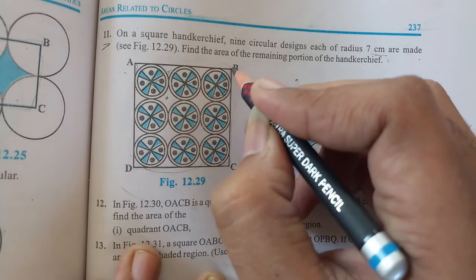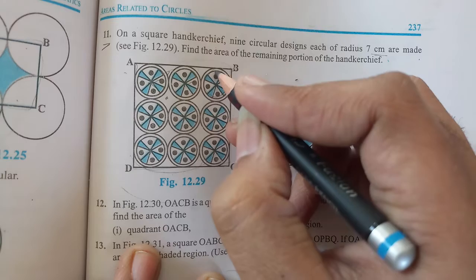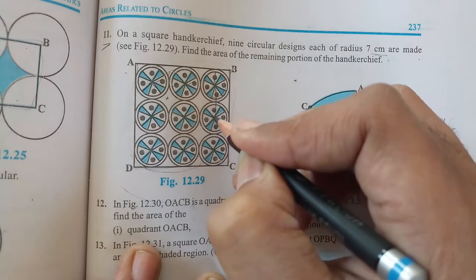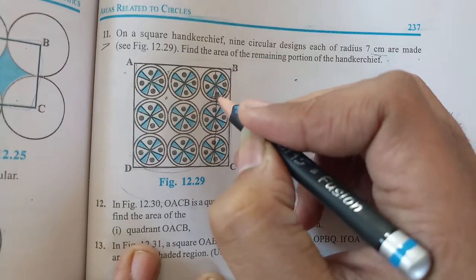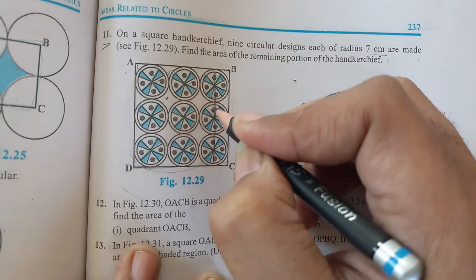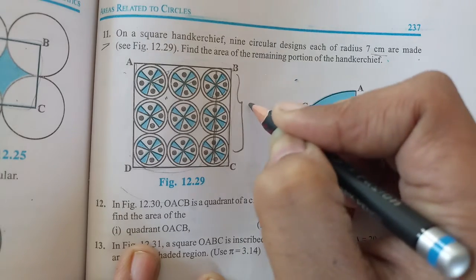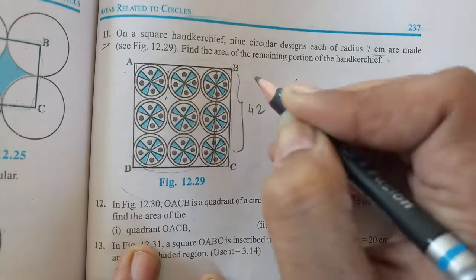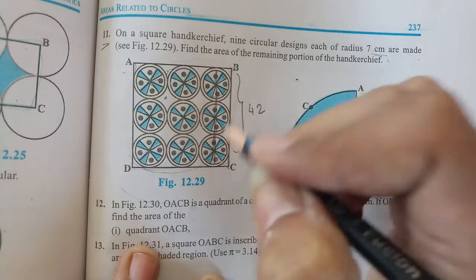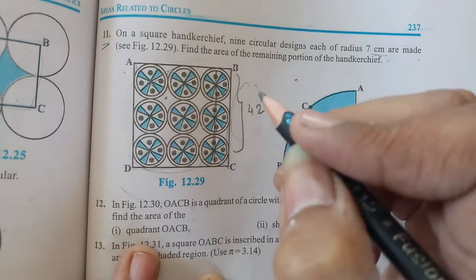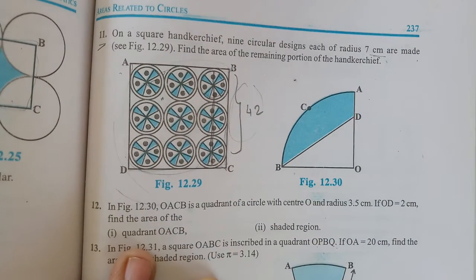But for the square, the side length is not given. The square's side length will be diameter plus diameter plus diameter. One circle's radius is 7, meaning its diameter is 14. Adding all three diameters: 14 plus 14 plus 14 equals 42 centimeters. So the square's side length is 42 centimeters.